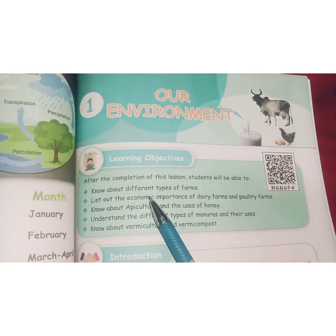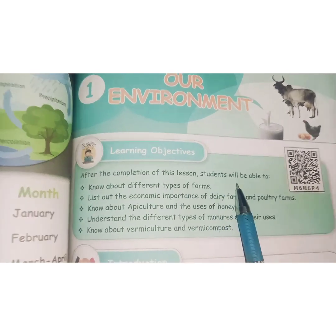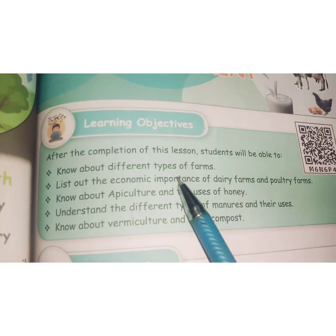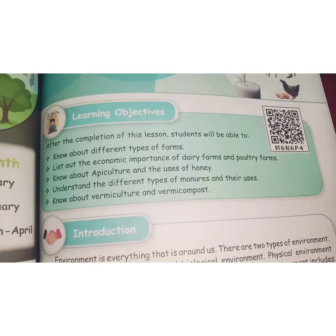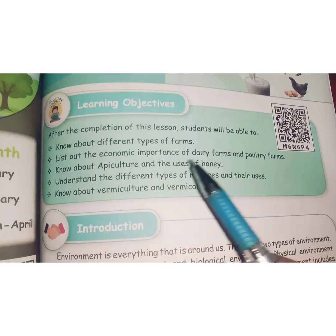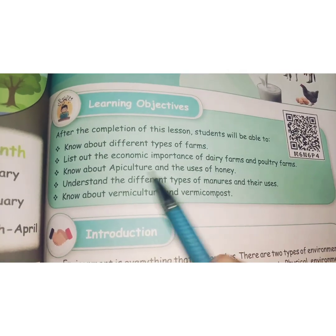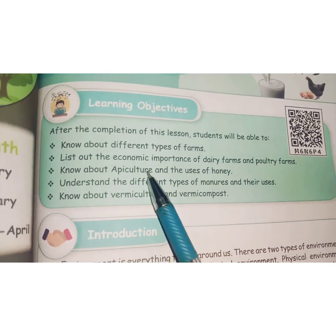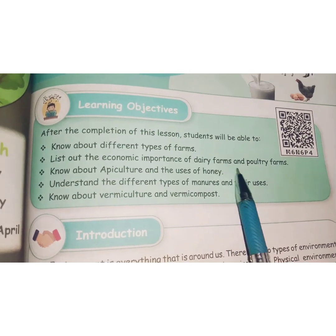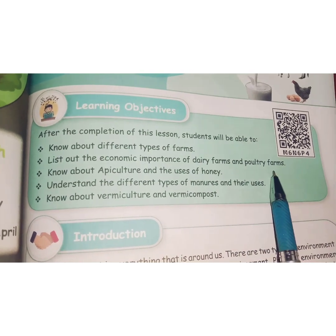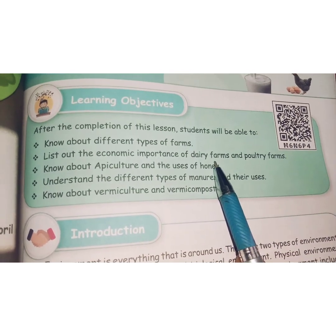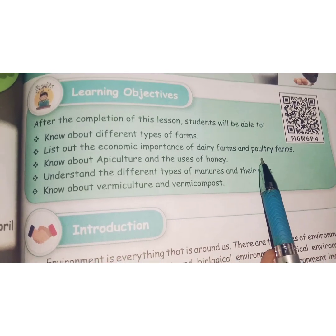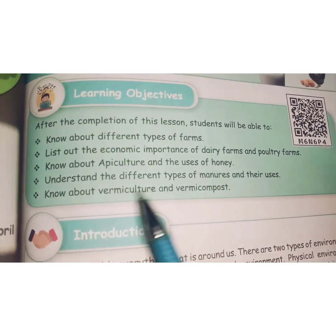After the completion of this lesson, students will be able to know about different types of farms — that is, different types of land use. They will also list out the economic importance of dairy farms — which are milk-producing farms — and poultry farms — which are chicken-rearing farms.